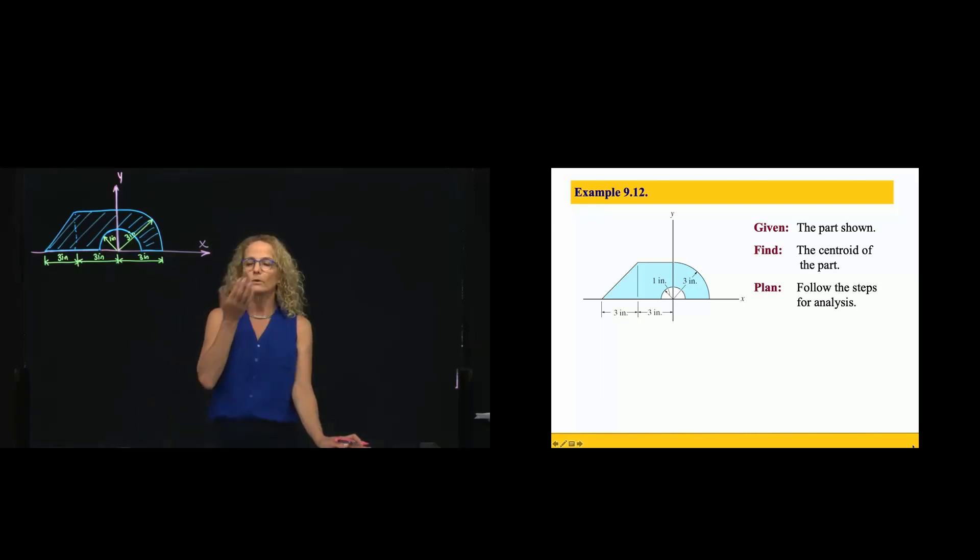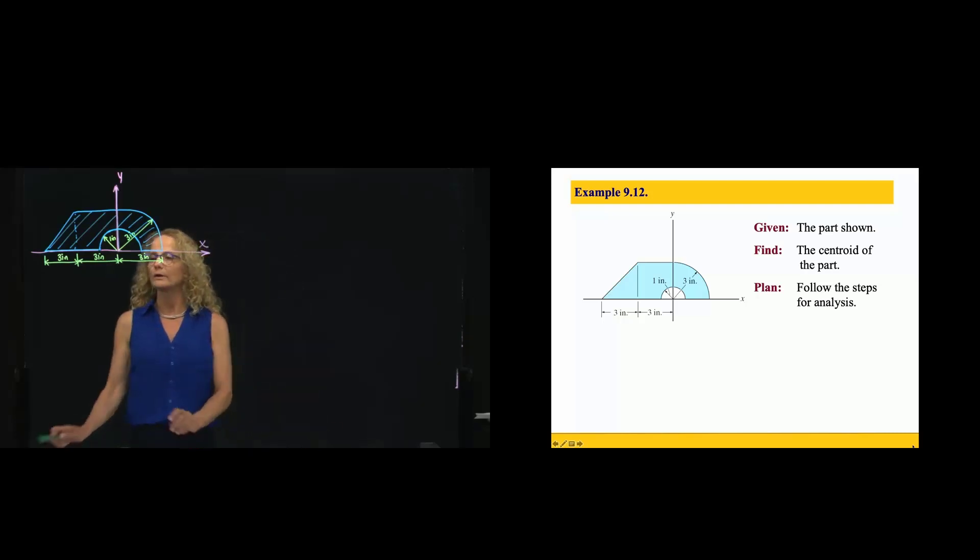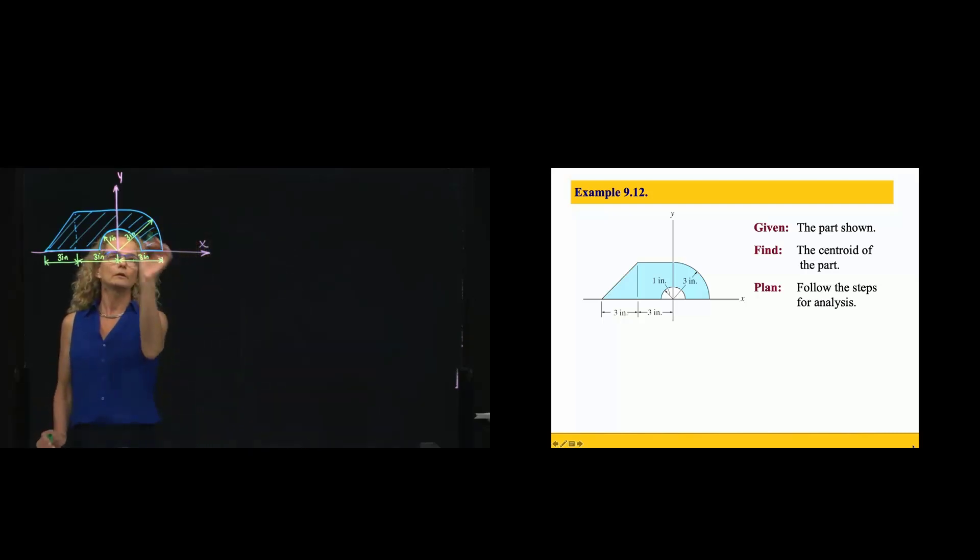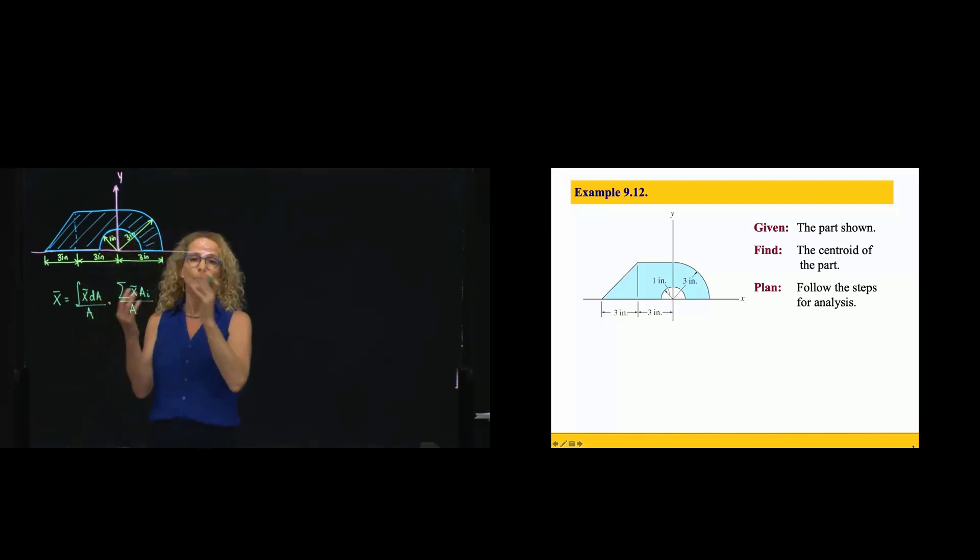So as we recall the definition of centroid in 2D, we have x equals the integral of the centroid of differential of area divided by the area. But when we have composite areas, we can convert that integral into a summation of the composite areas times the area of each of the segments that we choose to divide our figure into.